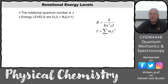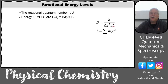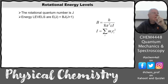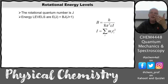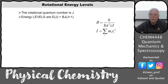The rotational constant B is Planck's constant over eight pi squared, times the speed of light, times I. In a particle in a box, mass and the length of the box were in the denominator. For rotational energy levels it's the moment of inertia, which for a diatomic would be the reduced mass and the bond length — so we still end up with a mass and a length squared, just like our particle in a 1D box.